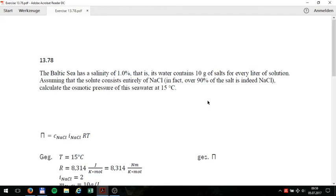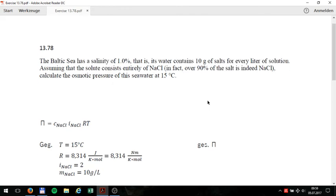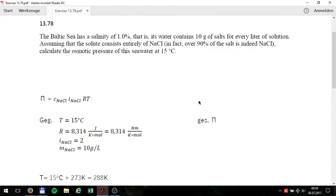At first, I look at the formula used for this and at the given factors. The used formula is p equals the concentration of NaCl multiplied by the van't Hoff factor i of NaCl, multiplied by the gas constant R, multiplied by the temperature T.